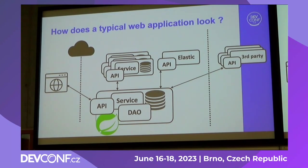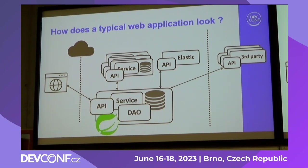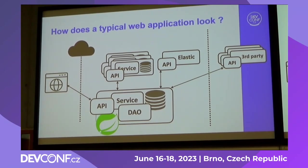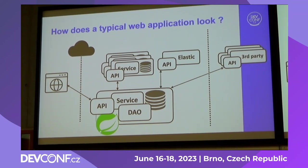How does a typical web application look? Nowadays we usually have at least a frontend in React, Angular, or Vue. And backend services we write in Spring. They are in the cloud, so they communicate with other services, some managed services, or third-party APIs.